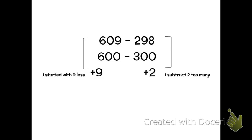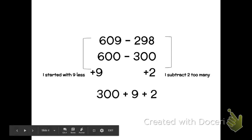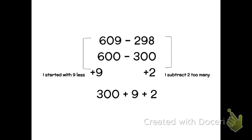So I'm writing down 600 minus 300 because 298, if I rounded to the nearest hundred, would be 300. I always like to keep track of how much more I'm subtracting every single time. So in this one on the left hand side I'm starting with nine less than I need to and on the right hand side I'm going to subtract two too many.